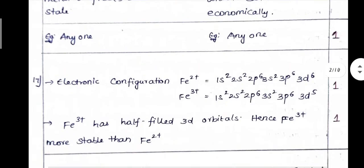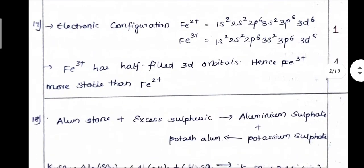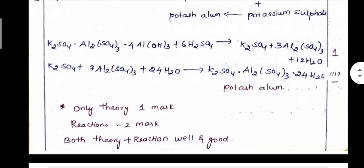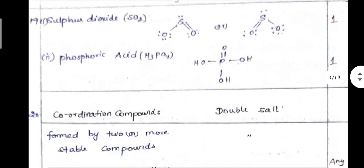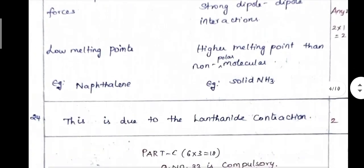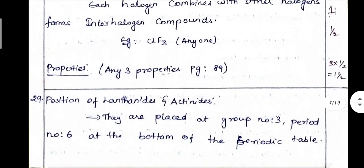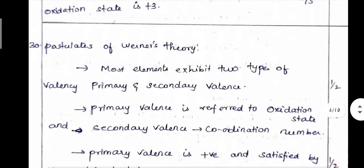If you have the electronic configuration, that is very good. If you have the equation, I will correct the 2 points. Next, I will correct the key answer. If you have the description, you can download and use it. If you have a mistake, you will correct it.